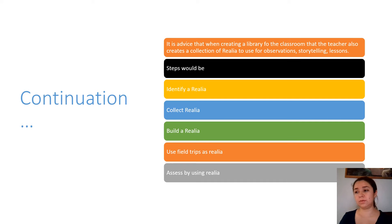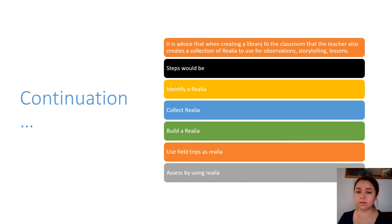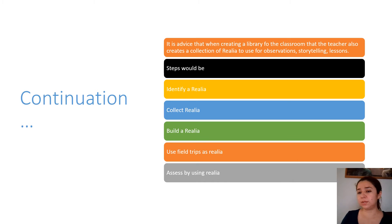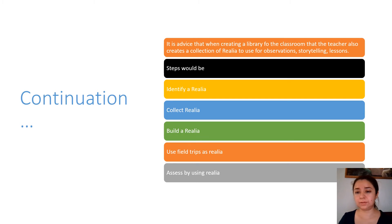Using realia for assessment means when you want to know the children's vocabulary, you bring all the fruit out and ask, 'How do you say banana?' or 'Can you tell me what this item is?' They'll say the word, and you'll know their level in English and in their home language.